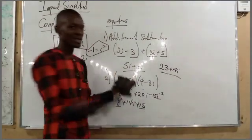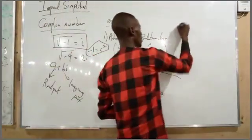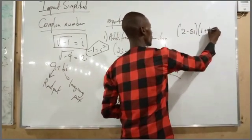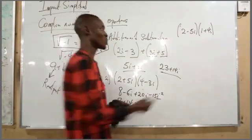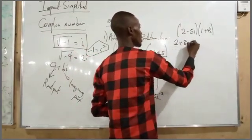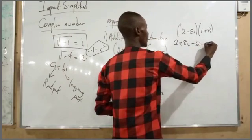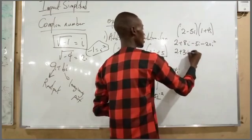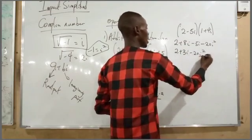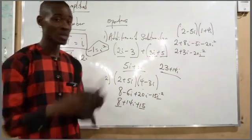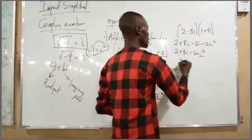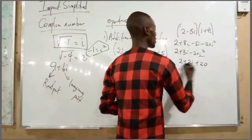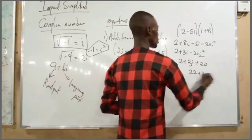Another multiplication example: (2 − 5i)(1 + 4i). Expanding gives 2 plus 8i minus 5i minus 20i². Collecting like terms: 2 and the i terms give plus 3i, and since i² equals minus 1, minus 20i² becomes plus 20. So 2 plus 20 gives 22, and the result is 22 plus 3i.